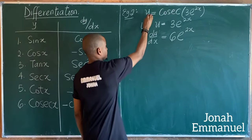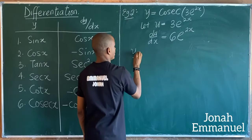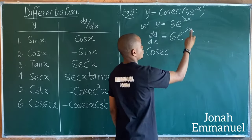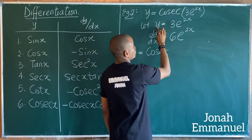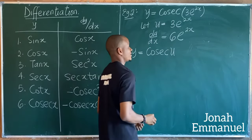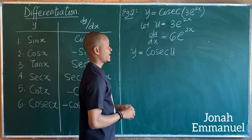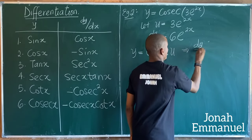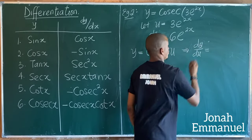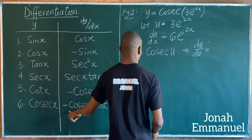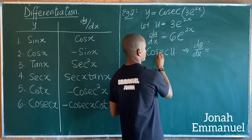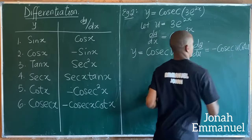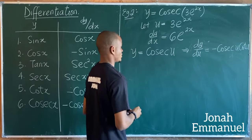Next, y becomes equal to cosec(3e^(2x)), and we said 3e^(2x) is equal to u, so y is now equal to cosec(u). If I differentiate y with respect to u, dy/du — since differentiating cosec(x) gives minus cosec(x)cot(x) — differentiating cosec(u) gives minus cosec(u)cot(u).